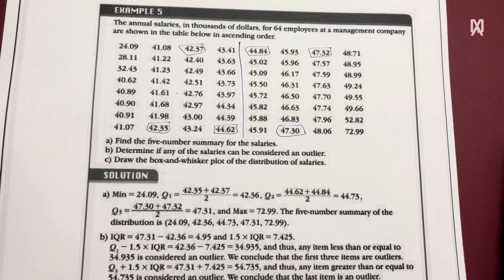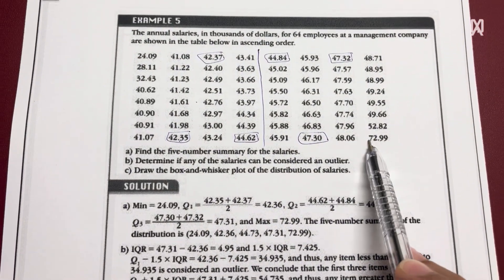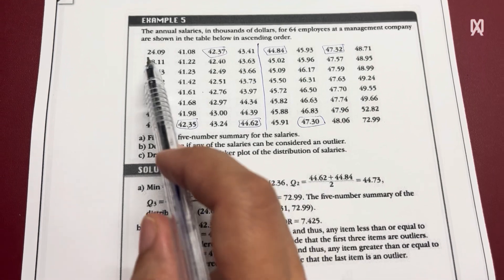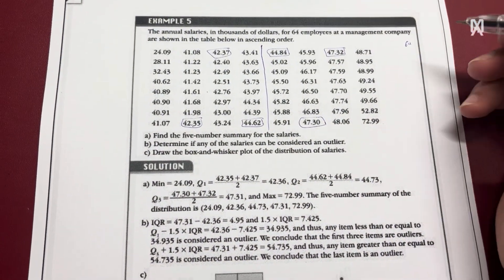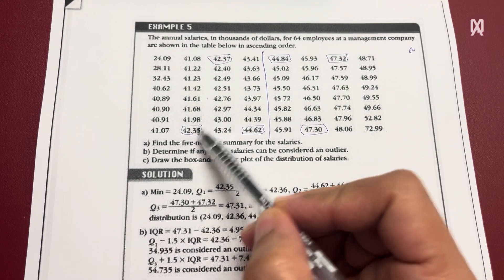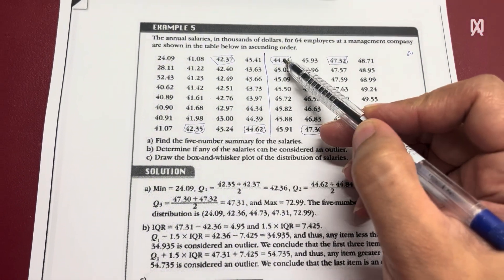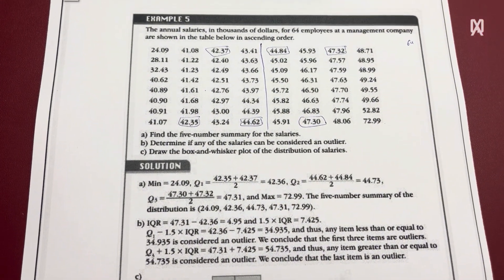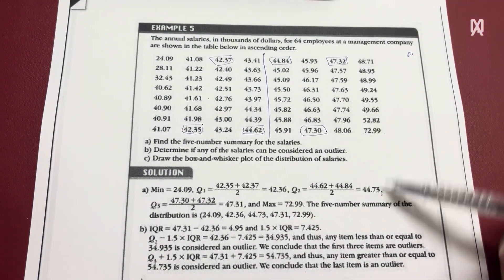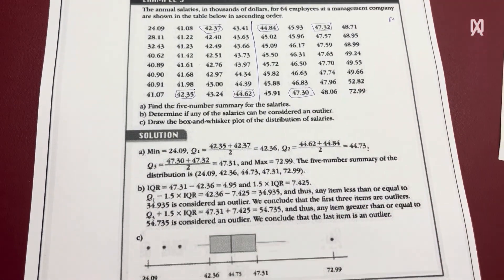If you take this example to draw the box and whiskers plot, the minimum value is 24.09 and the maximum value is 72.99. So you know the start point and the end point of your graph. For the first quartile, there are 64 numbers, so 64 times 0.25 is 16 and 17. So your first quartile will be the average of the 16th and 17th numbers. The middle quartile will be the average of the 32nd and 33rd numbers, and the third quartile will be the average of the 48th and 49th numbers.